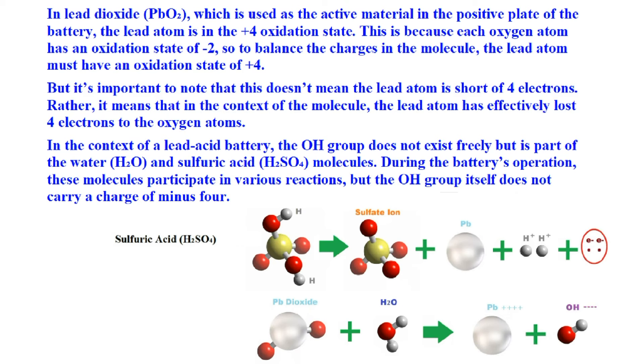In the context of the lead acid battery, the OH group does not exist freely but is part of the water H2O and sulfuric acid H2SO4 molecules. During the battery's operation, these molecules participate in various reactions, but the OH group itself does not carry a charge of minus four. The problem is that this fellow wants to talk about the chemical math — the mathematics of a chemical reaction. The video is not doing math; it's doing physics. The math we just took from quantum mechanics: it's what's on one side of the green arrow equated to the other side, and the numbers have to match. But that doesn't mean the math represents what's happening in the real world as far as the physics — what's happening qualitatively, what physical interpretation do we give to this?